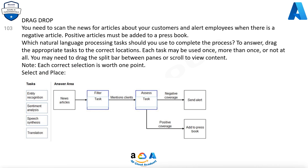Question 103. Drag and drop. You need to scan the news for articles about your customers and alert employees when there is a negative article. Positive articles must be added to a press book. Which natural language processing tasks should you use to complete the process? Note, each correct selection is worth one point.